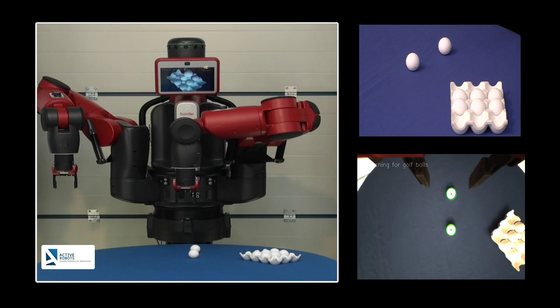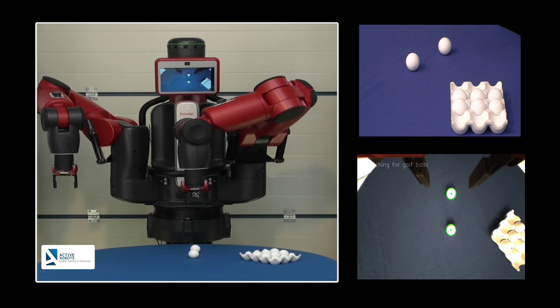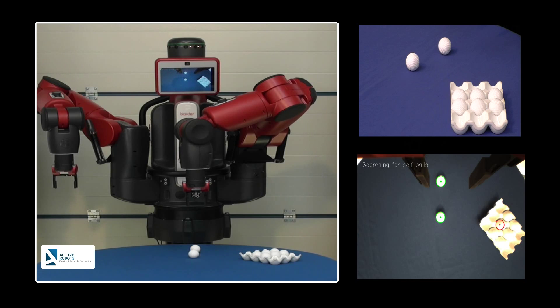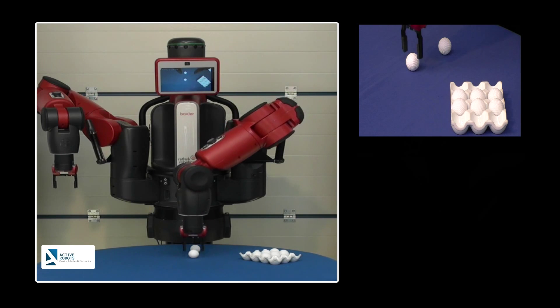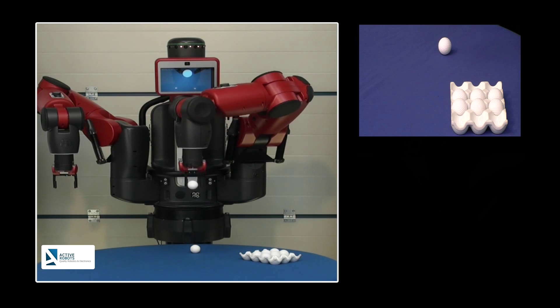Baxter always tries to place the arm above the ball. This is the most accurate way of eliminating as much error as possible.